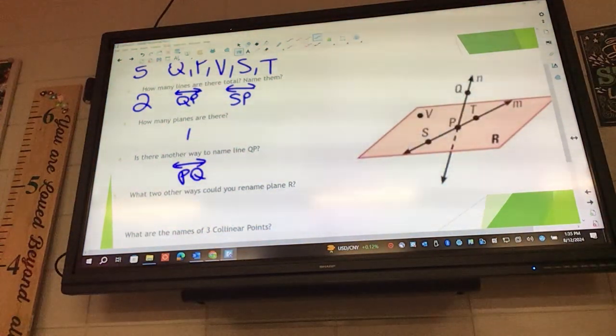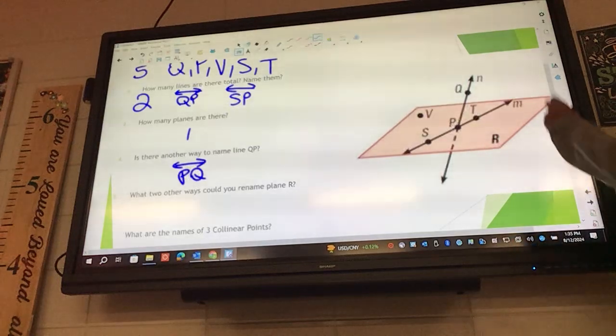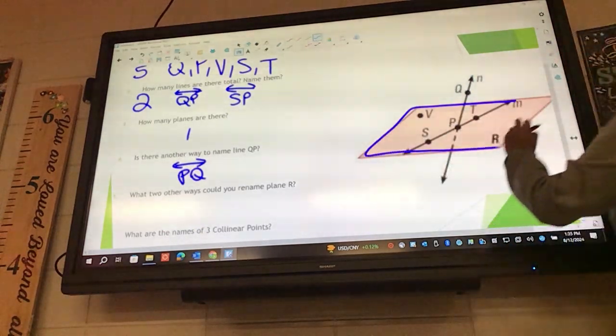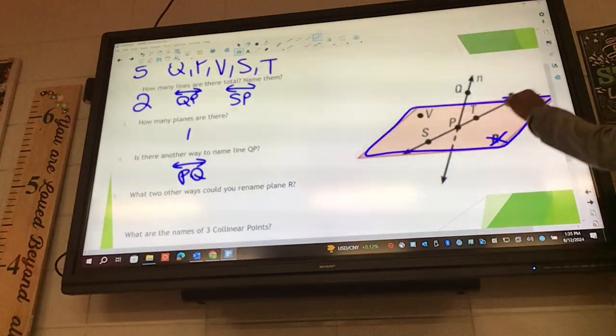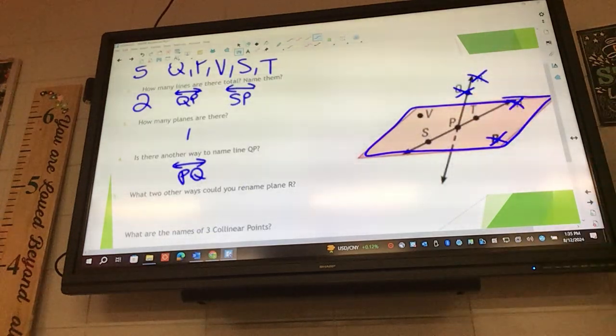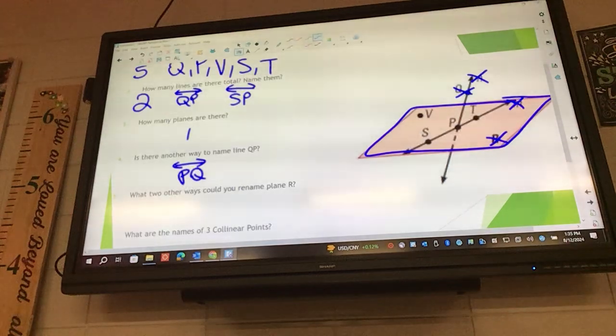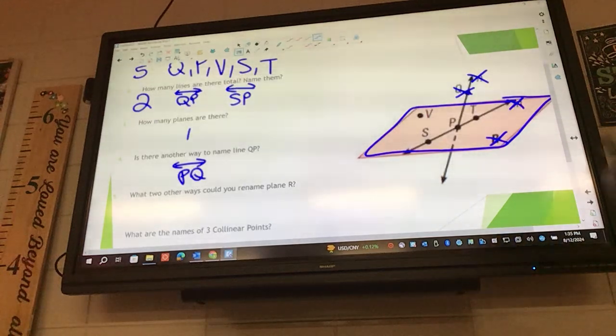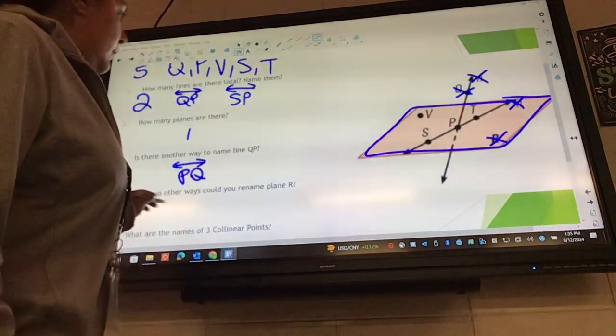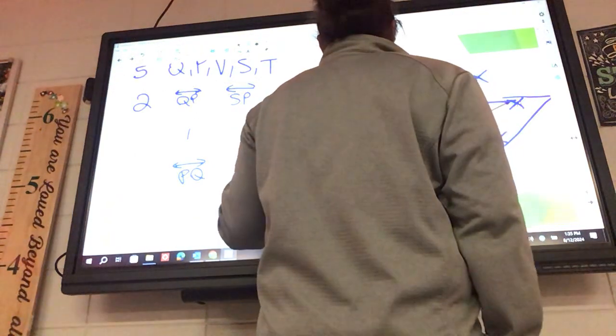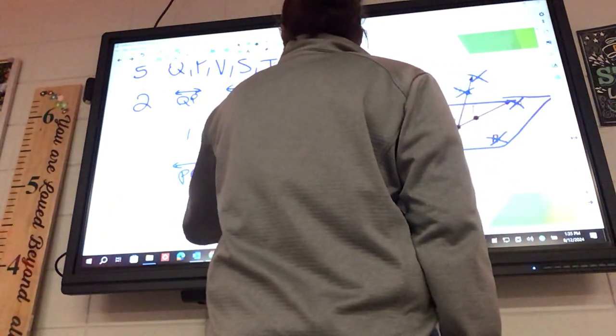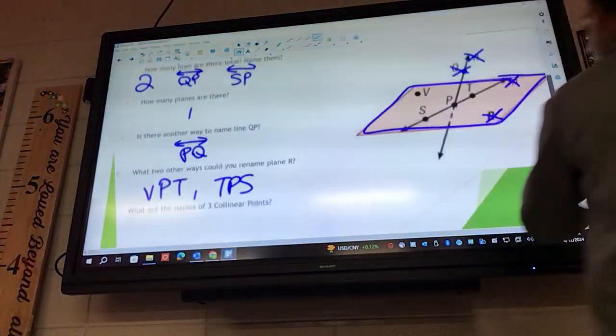What other two ways could you rename the plane R? So what is one requirement to name a plane? They have to be inside the square for sure. They've got to have a point. So what can we cross out? R, I agree. M, Q, and N. And then how many points do you have to use to name a plane? Three. We have to use three. So any order of the three that are left, or the four that are left, totally works. What somebody got? VPT. Another one? TPS. Does somebody agree with Bevin? Does that one count?